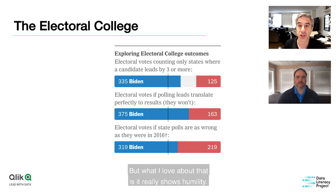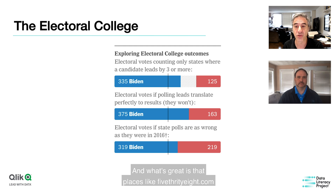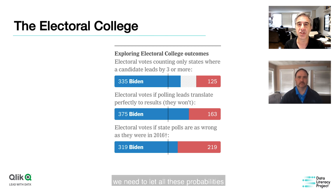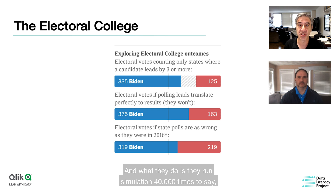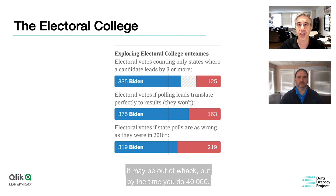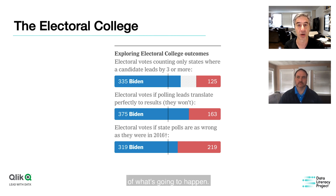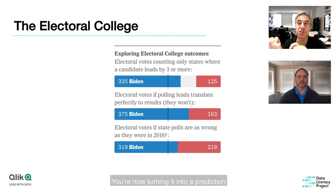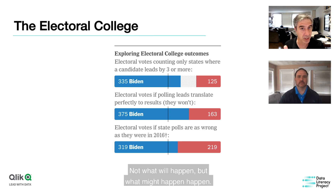Places like FiveThirtyEight.com are starting to say: just because we see a static answer once doesn't tell the whole story — we need to let all these probabilities interact. They run a simulation 40,000 times, using the law of large numbers again, because the first few runs may be out of whack but by 40,000 you have a confident idea of the probability of outcomes. You're not measuring something like a poll; you're turning it into a prediction of what might happen, not what will happen.